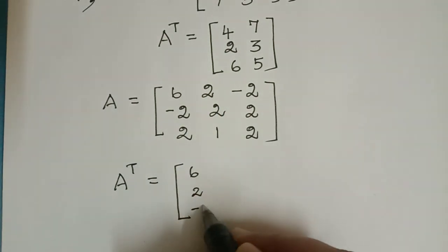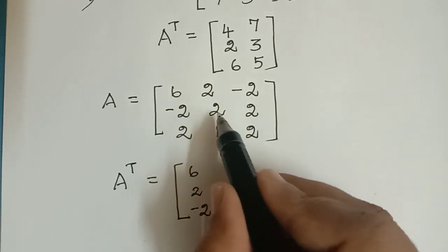So 6, 2, minus 2. The second row is minus 2, 2, 2, and it becomes as a column.